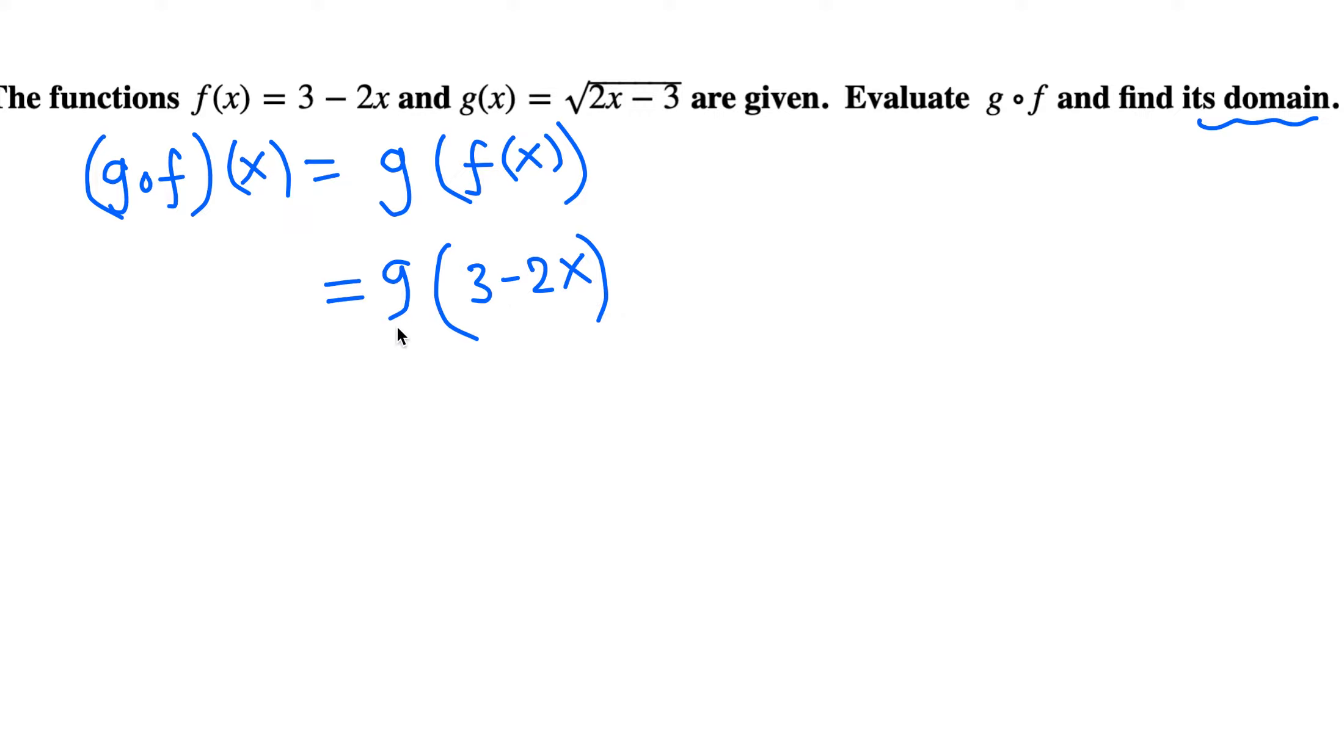Now g(x) is given by √(2x - 3). That means g of any input is square root of 2 times input minus 3. That input is 3 - 2x in our case, so g of this one is square root of 2 times (3 - 2x) minus 3.